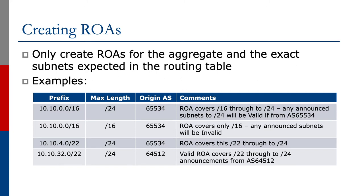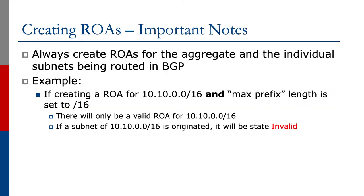It's important to be a little bit careful about creating ROAs. Some operators have a temptation to create ROAs covering an address prefix all the way down to the smallest subnet possible. This means that any subnet of that prefix originated from the correct AS will be considered valid. There's nothing stopping another entity using the same AS to originate a smaller subnet of this prefix, causing a hijack or denial of service on the original address space. My advice is always to create ROAs for the aggregate and individual subnets being routed in BGP.